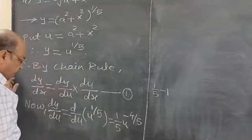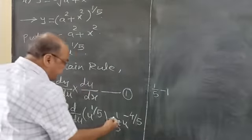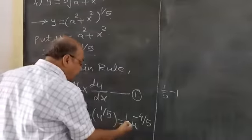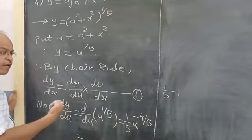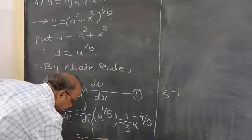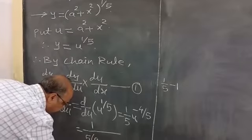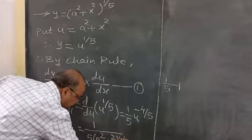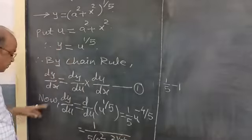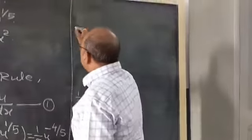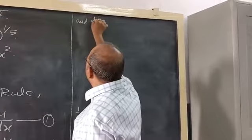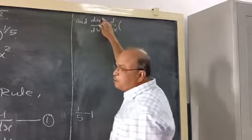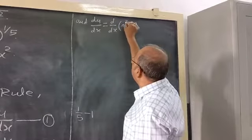Since the power of this factor is negative, transfer this factor to the denominator. Therefore dy by du = 1 upon (5 into (a² + x²) raised to the power 4 by 5). Then du by dx: u in terms of x is a² + x². Derivative of a² is 0 (constant), and derivative of x² is 2x. So du by dx = 2x.